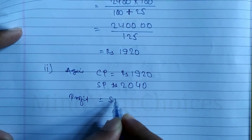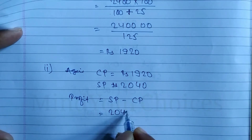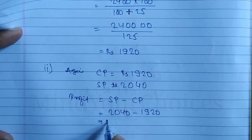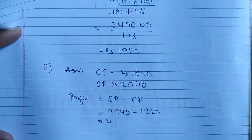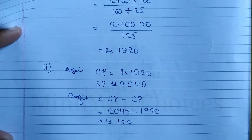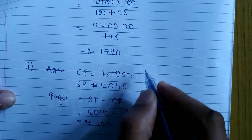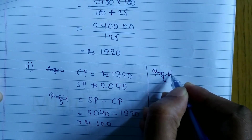Profit formula is: Profit = SP minus CP. SP is 2040 and CP is 1920. Subtracting: 2040 minus 1920 equals 120. So profit is Rupees 120. Now to find profit percent, the formula is: Profit percent = Profit divided by CP, multiplied by 100%.